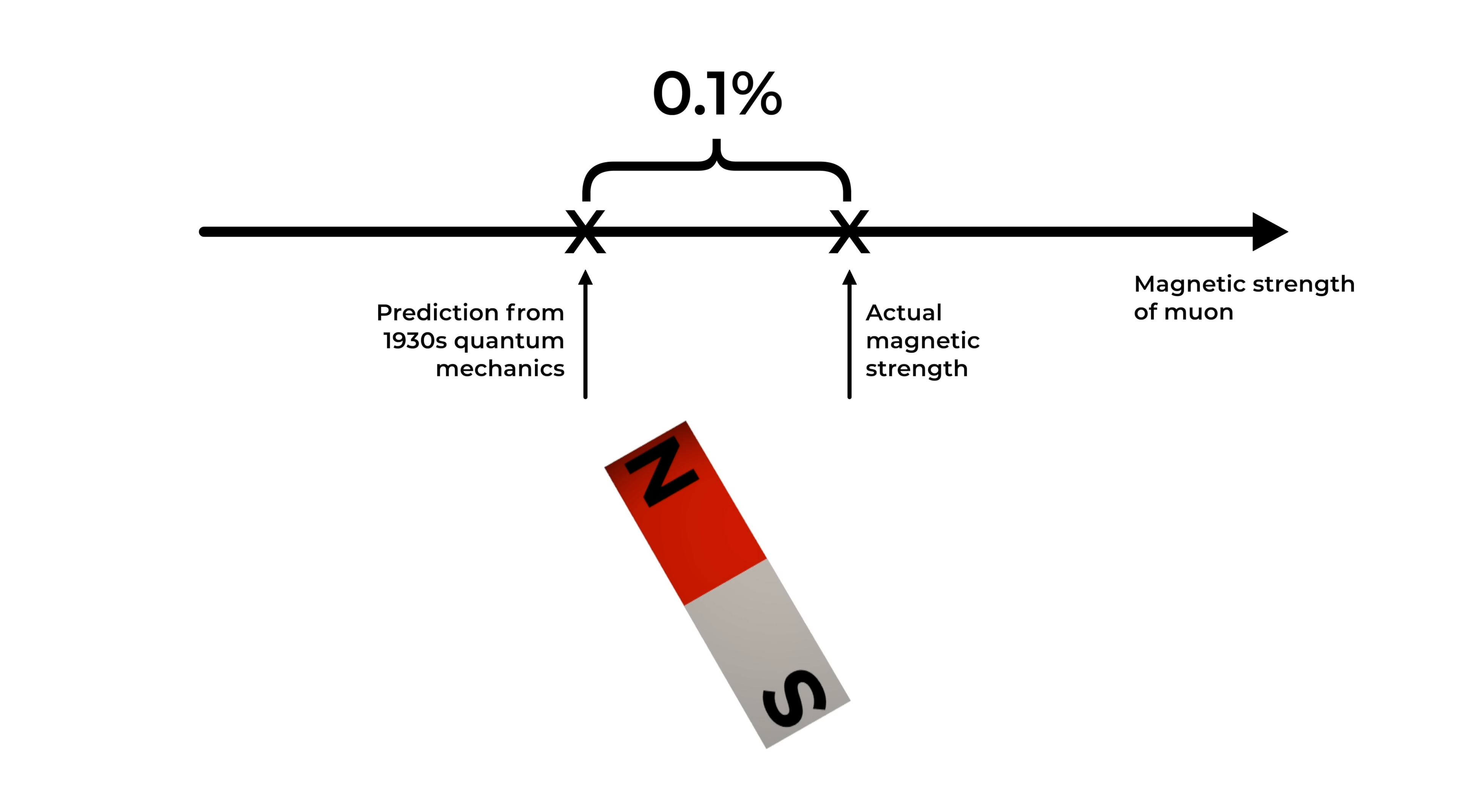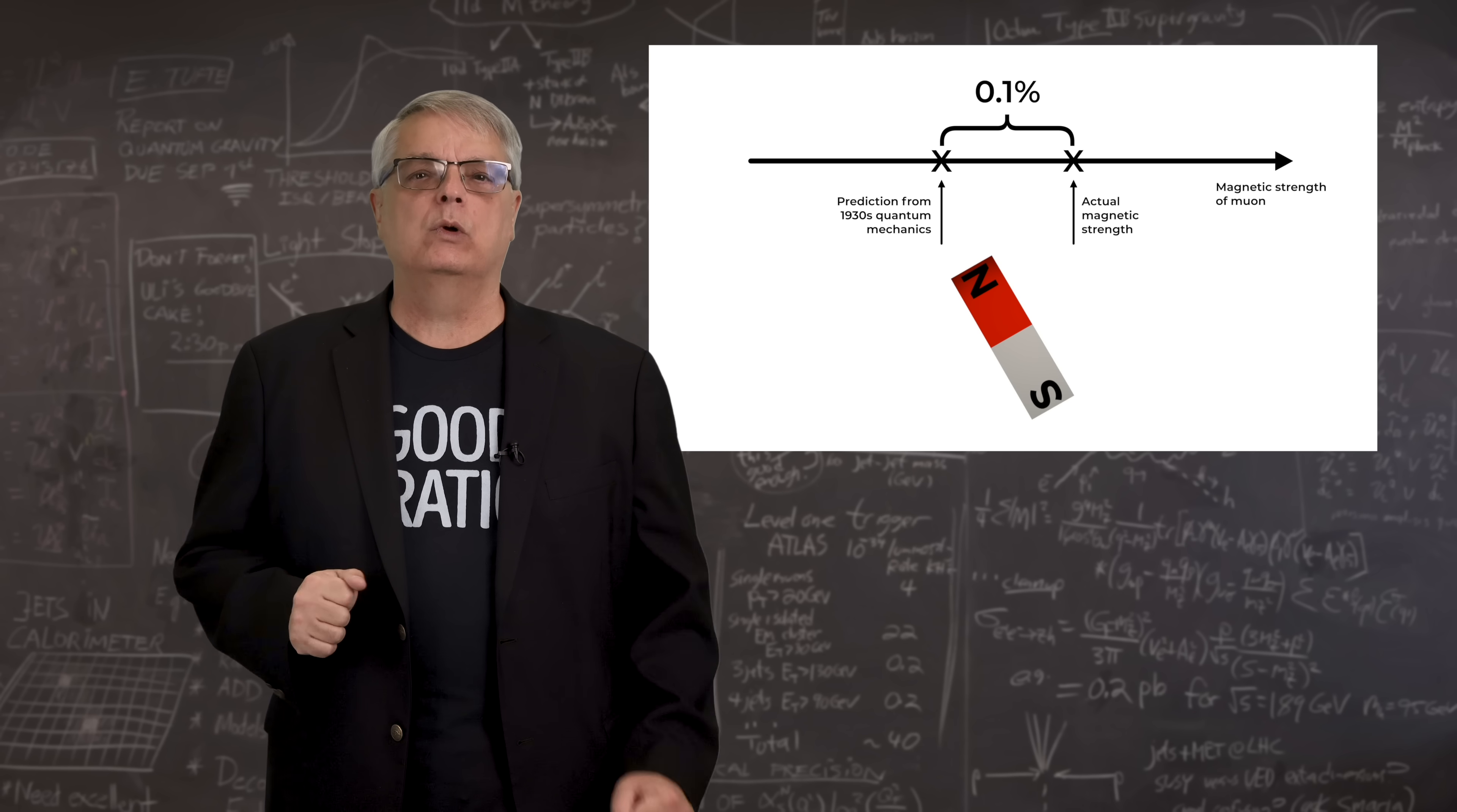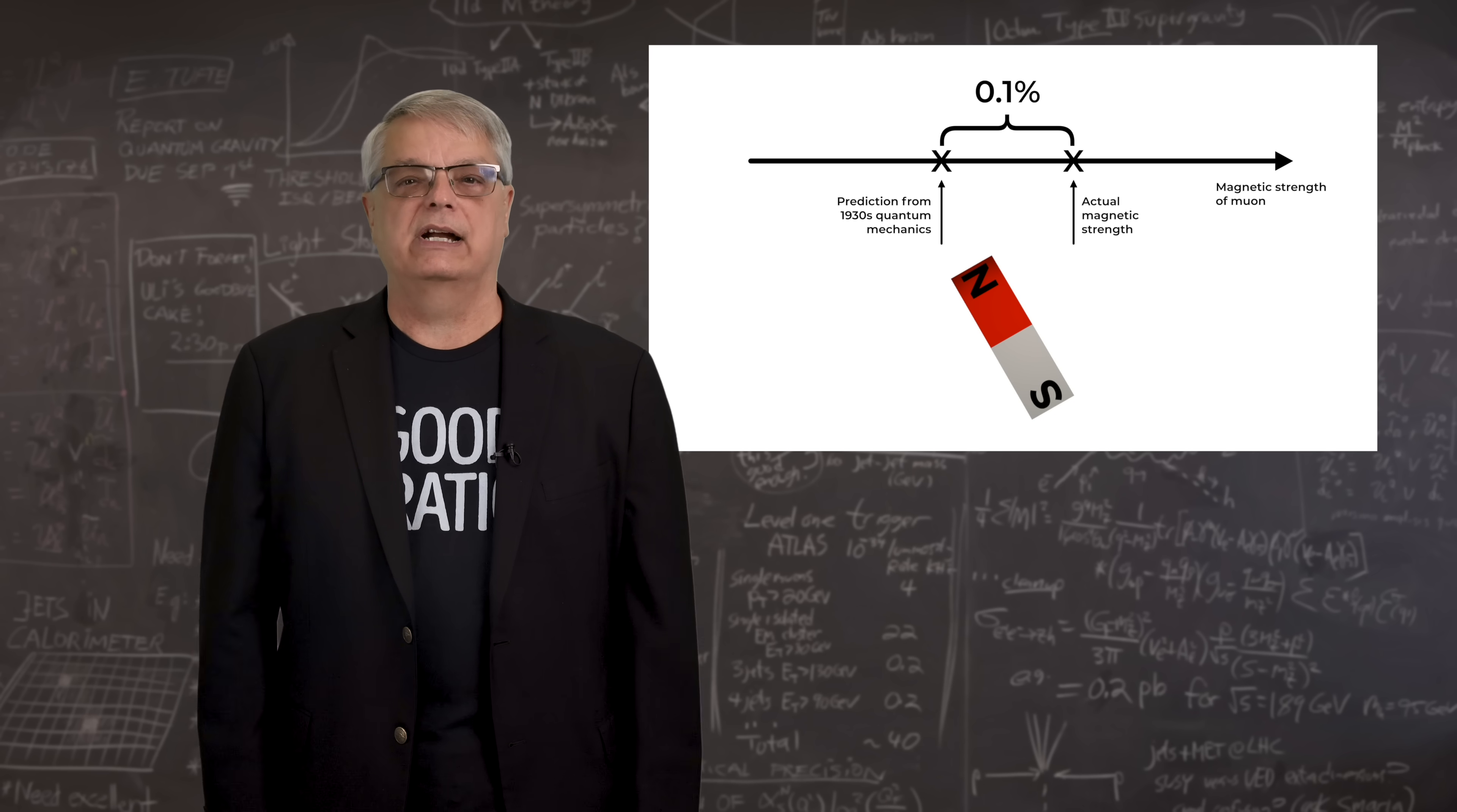This tiny shift is because each muon is surrounded by virtual particles, and the interaction between the muon and the virtual particles causes a tiny shift.